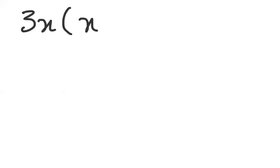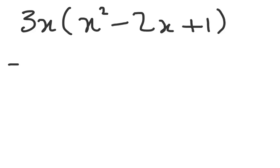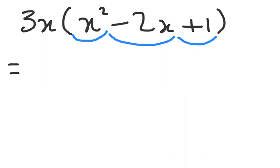The second example has three terms: 3x multiplied by x squared minus 2x plus 1. The first thing we identify is how many terms are in the bracket. Look at the signs — there's a minus and a plus — so x squared is the first term, minus 2x is the second term, and plus 1 is the third term. That means our answer will also have three terms.